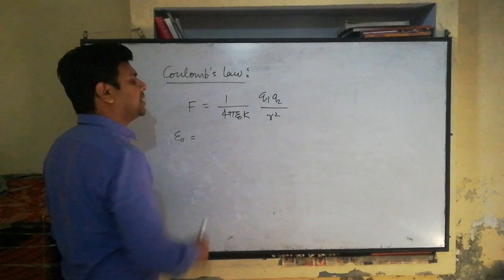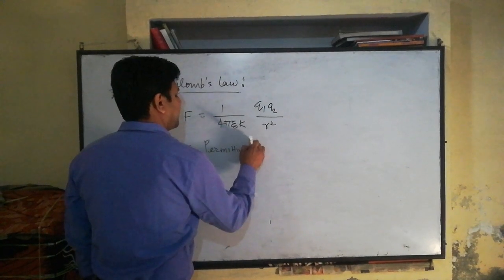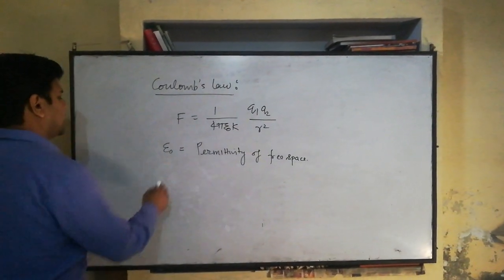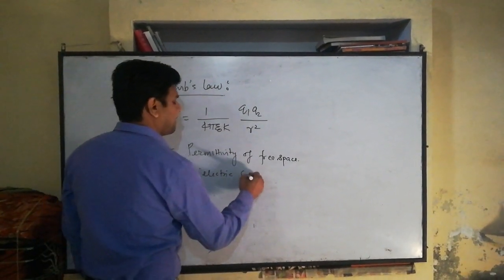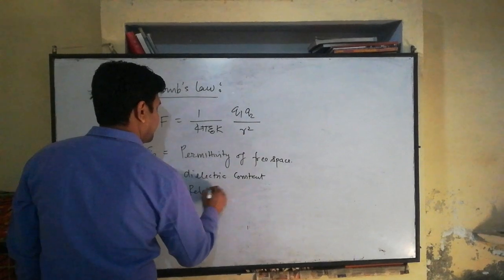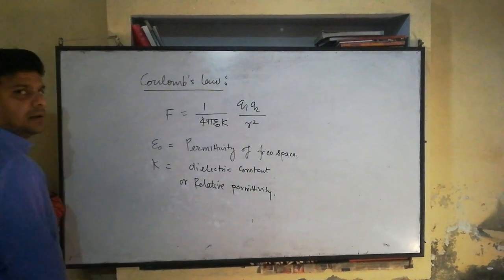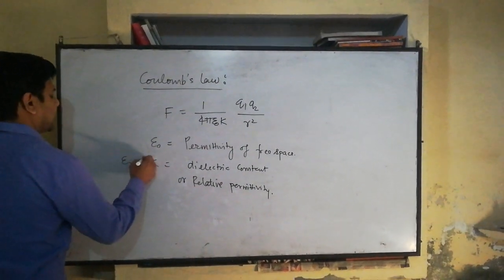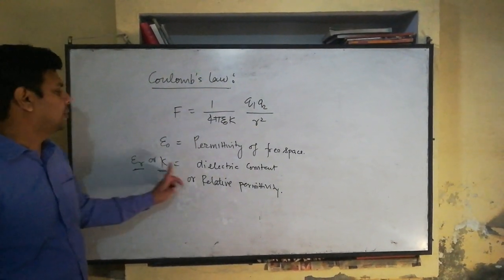ε₀ is the permittivity of free space. And here we have K, which is called the dielectric constant or relative permittivity. We have another symbol for dielectric constant: K or ε_r. We can use either of these symbols, K or ε_r, for the dielectric constant.